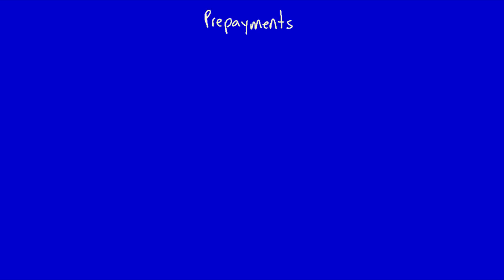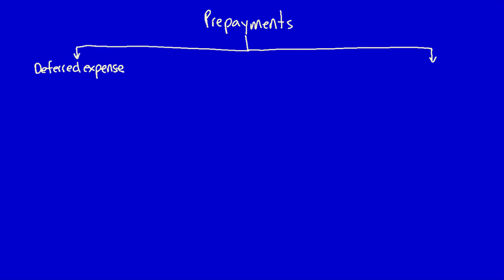Remember, we're using the balance sheet method and we start with the word prepayments. We're going to track both of them: deferred expense, also called prepaid expense, and deferred revenue, also called unearned revenue.